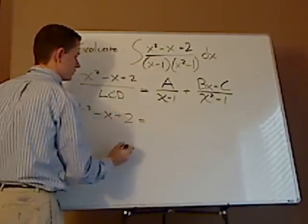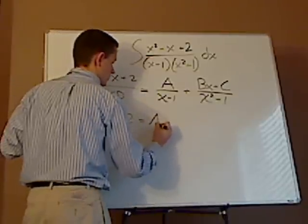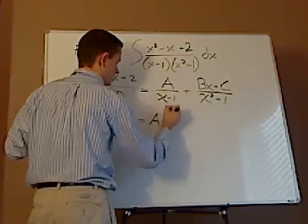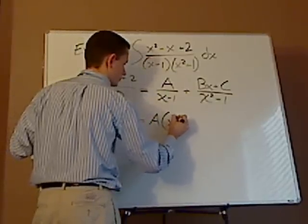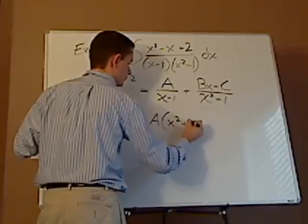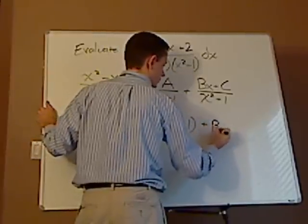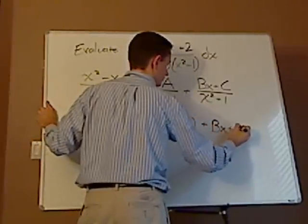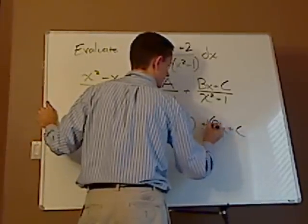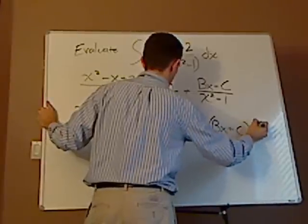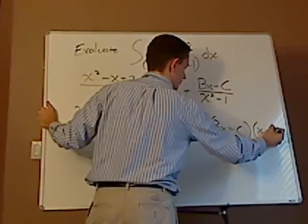So you have x squared minus x minus x plus 2 equals a, and this is going to be x squared plus 1 plus bx plus c parentheses x minus 1.